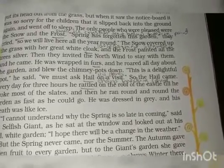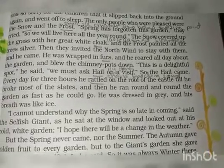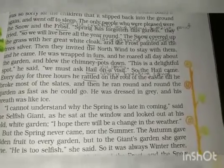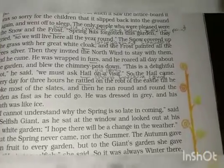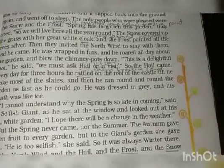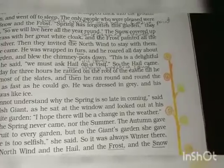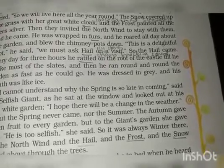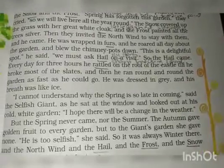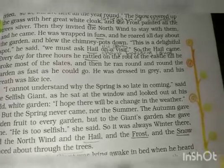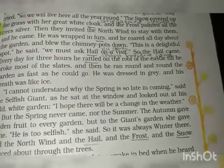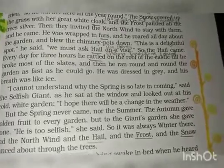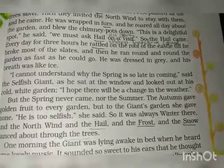'This is a delightful spot,' said the North Wind. 'We must ask Hail on a visit.' Hail refers to icy stones — hailstorms. So the Hail came, and every day for three hours he rattled — making sharp knocking sounds — on the roof of the castle until he broke most of the slates. Then he ran round and round the garden as fast as he could go, dressed in gray, and his breath was like ice.